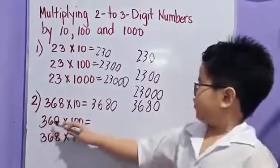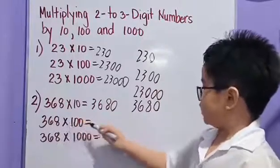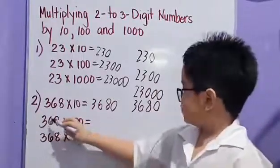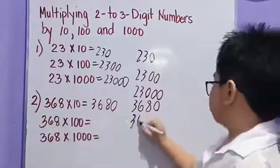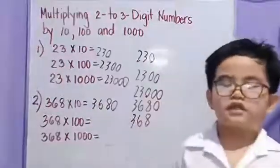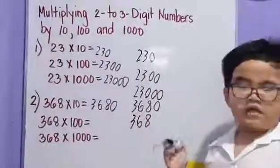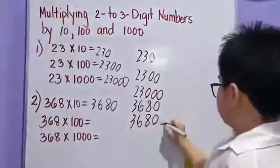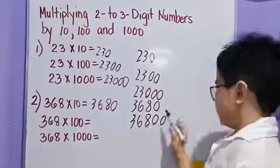Three hundred sixty-eight times one hundred: we have three hundred sixty-eight times one, we have three hundred sixty-eight. Let's count how many zeros we have — one, two. Then let's add two zeros: one, two. So we have thirty-six thousand eight hundred.